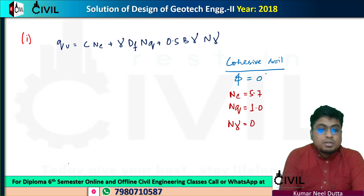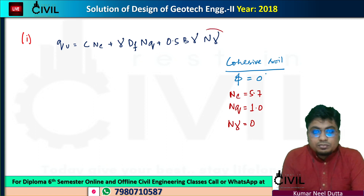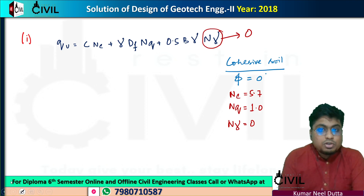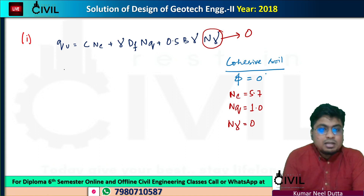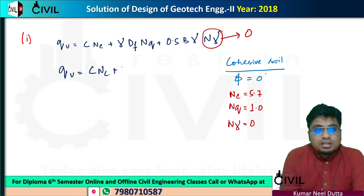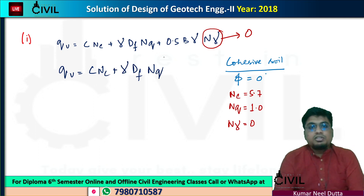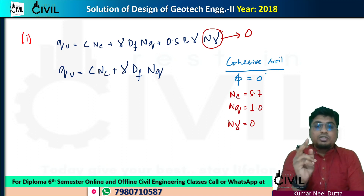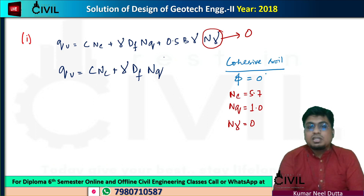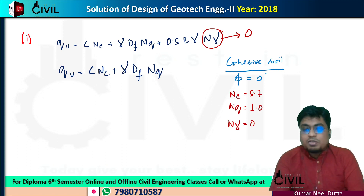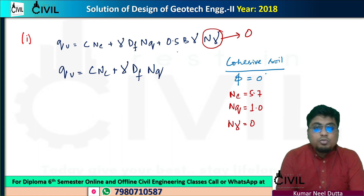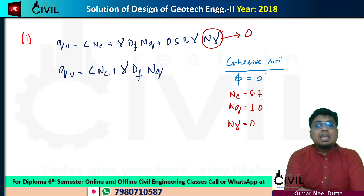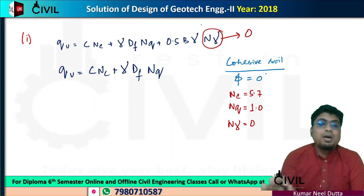So when we say cohesive soil, Nγ will be 0. The term 0.5·B·γ·Nγ becomes zero. So the bearing capacity factor term with B is 0. This means the width B does not affect the ultimate bearing capacity for cohesive soil.